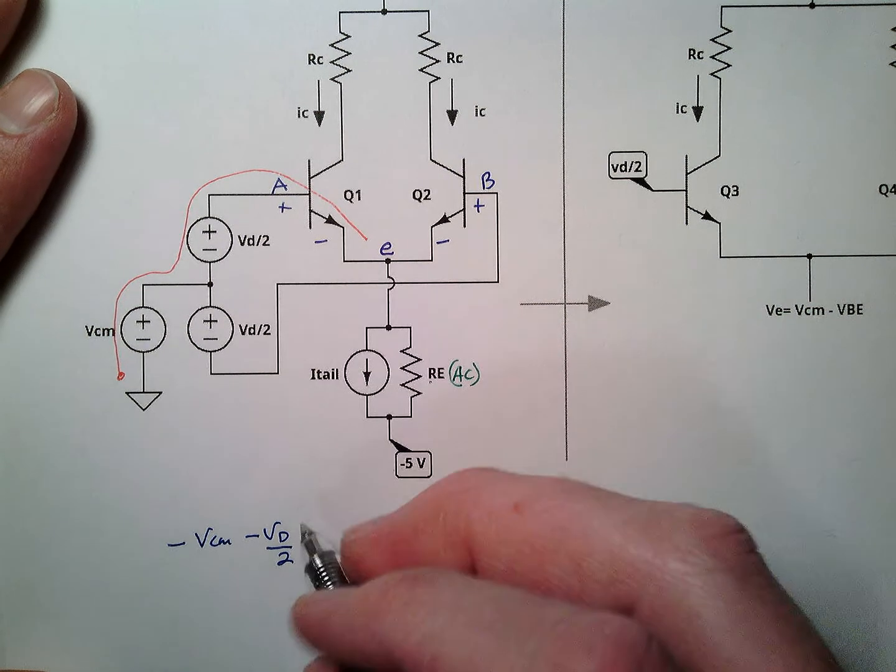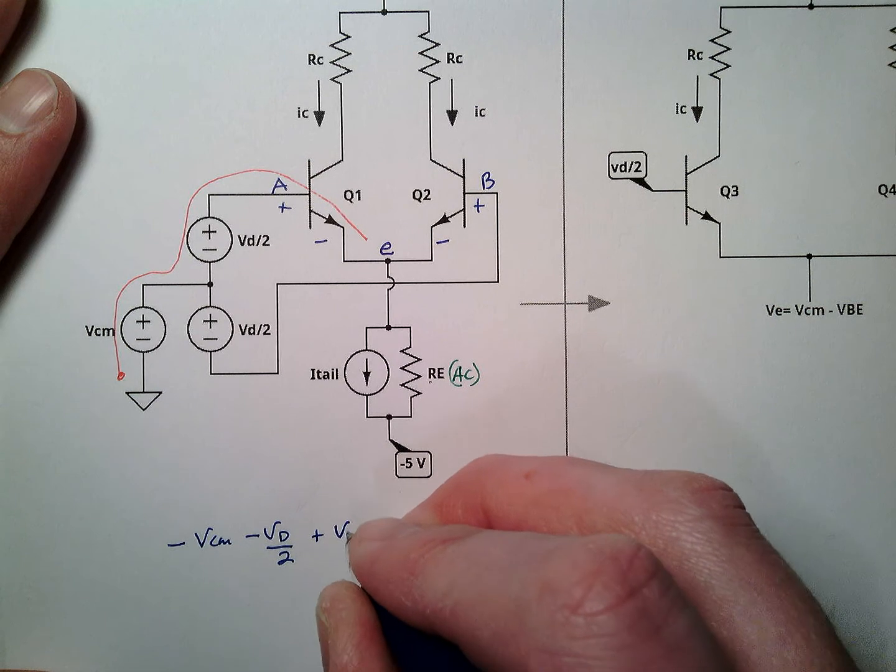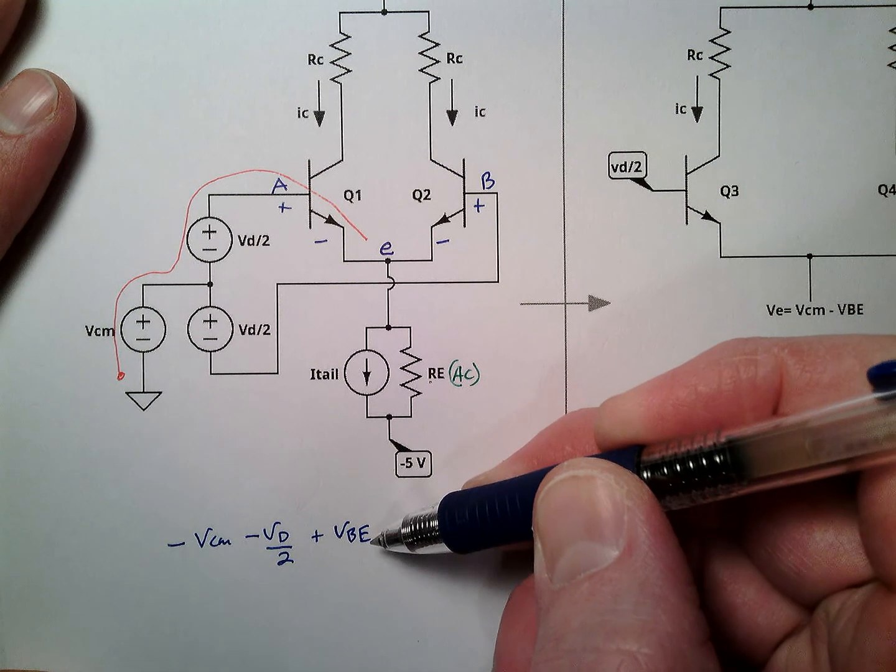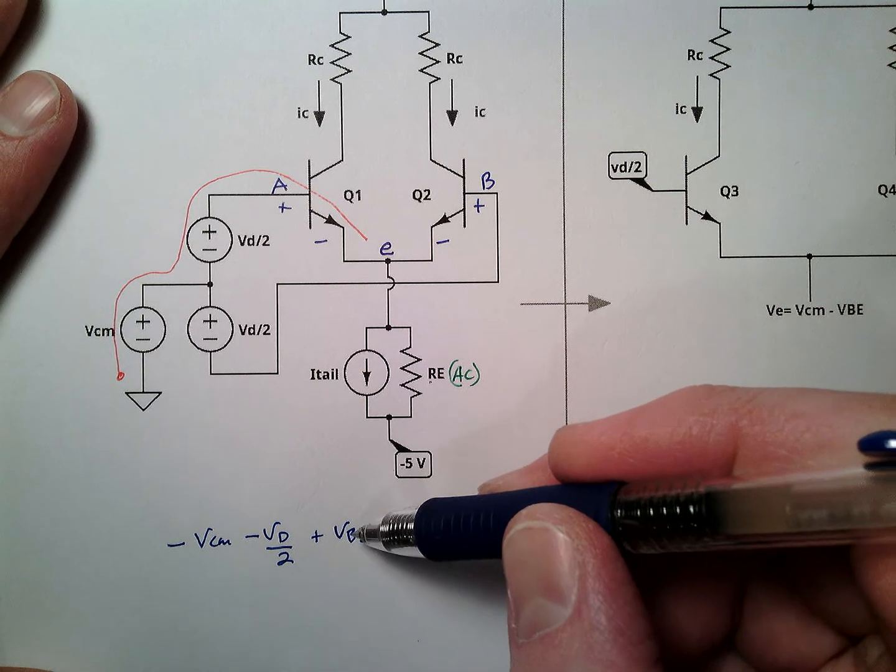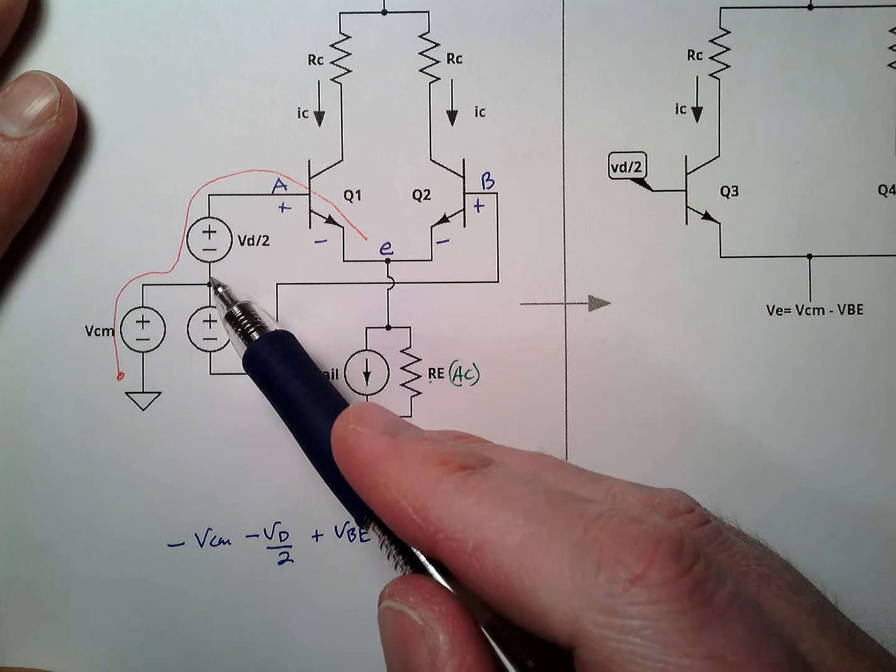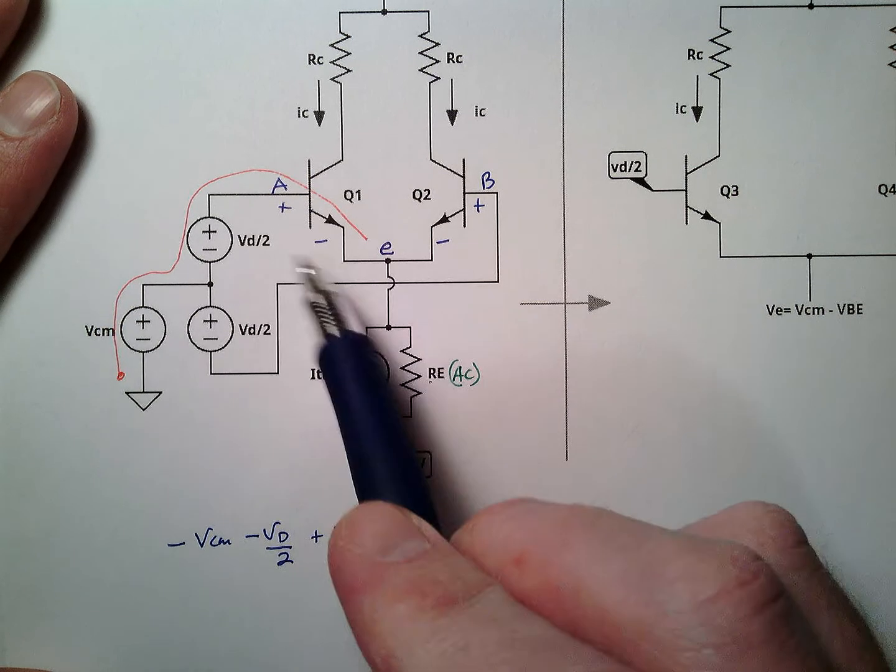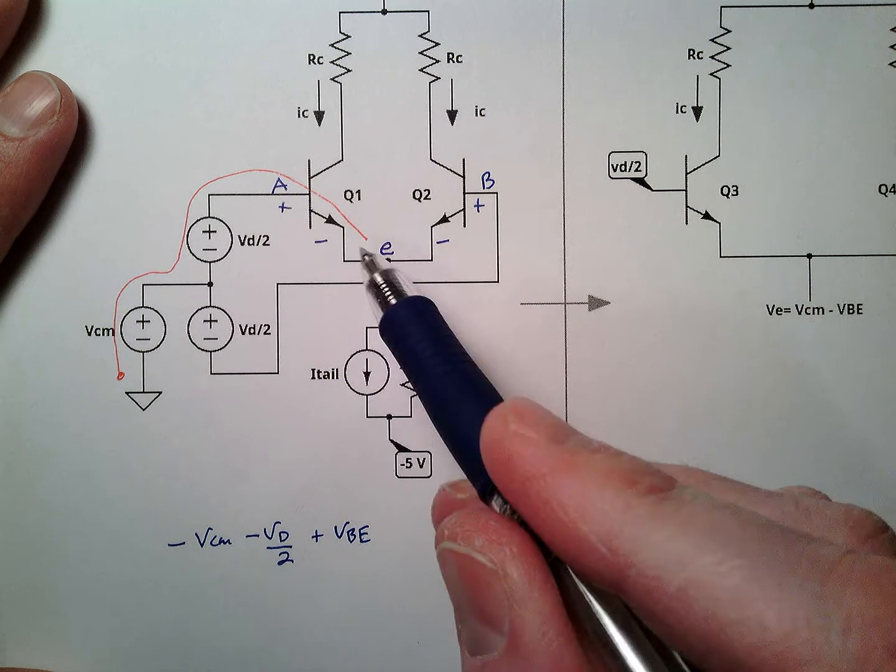Now we're going to come down. We're going to do plus VBE. Notice how this is lowercase, uppercase. This is the total signal. This will be important for us later when we have differential terms added here. But right now we're just, this is what we have.